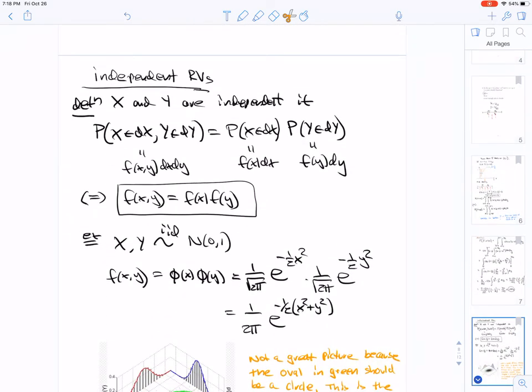We then talked about independent random variables. X and Y are independent if the probability that X is in dx, Y is in dy, is equal to the probability that X is in dx times probability that Y is in dy. That's equivalent to the joint density factoring into these marginal densities.